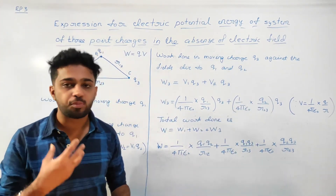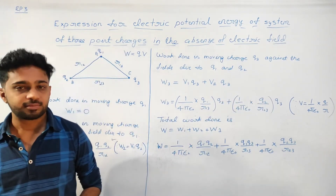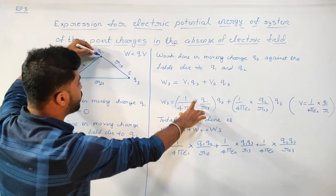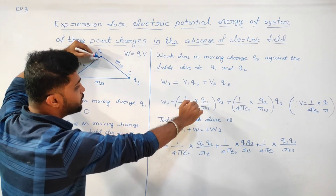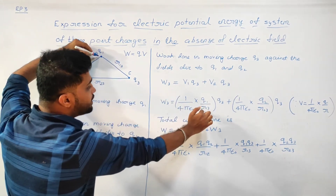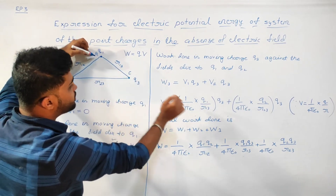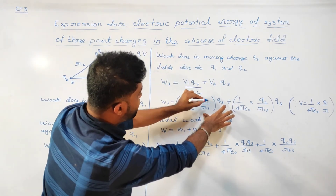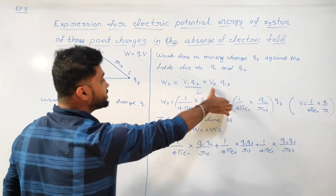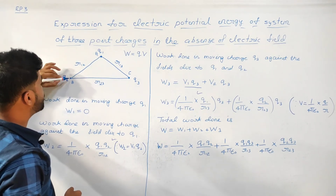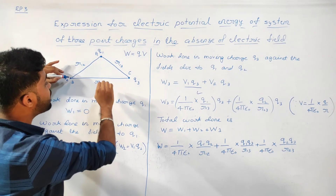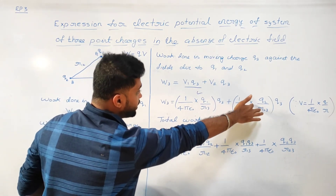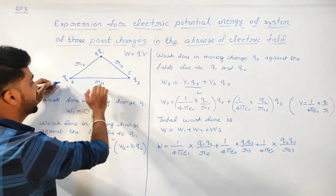Using V equals 1 upon 4 pi epsilon naught into Q by R: V1, the potential due to Q1 at point C, equals 1 upon 4 pi epsilon naught into Q1 divided by R13, where R13 is the distance between Q1 and Q3. Similarly, V2, the potential due to Q2 at point C, equals 1 upon 4 pi epsilon naught into Q2 divided by R23, where R23 is the distance between Q2 and Q3.